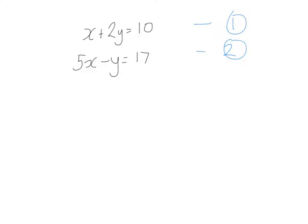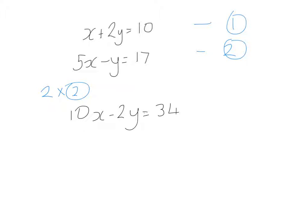Looking at elimination, I think it's best to eliminate the y's. But I can't eliminate them yet because one equation has a 2y and the other just has a y. To make it a 2y, I'm going to multiply equation two by 2. Multiplying everything by 2 gives: 10x take away 2y equals 34. I'm going to call that equation three.